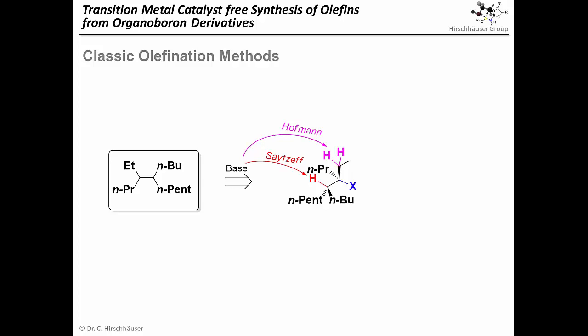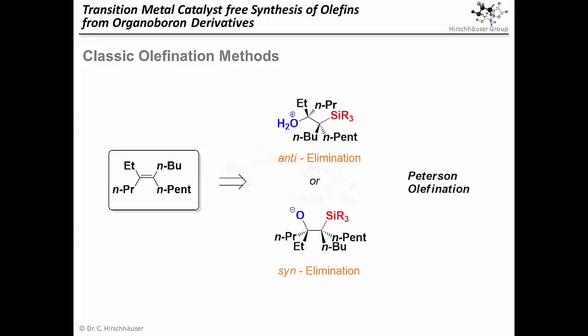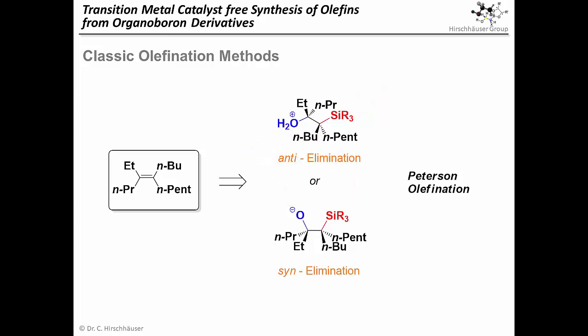Stereospecific elimination of a stereochemically well-defined precursor is a potential solution. But if we just eliminate a proton and a leaving group, we run into regioselectivity problems again. A textbook solution for this is provided by the Peterson olefination, where both elimination partners are well-defined. However, now we have pushed back the problem to the preparation or separation of potentially quite complex elimination precursors that have two adjacent stereocenters.